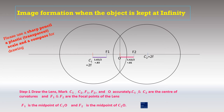The first step to draw a ray diagram accurately is to draw the lens correctly and mark the center of curvature, focus, and optic center of the lens. Using a very sharp pencil and compass, we draw two overlapping circles and mark C1 and C2 as the centers of curvature. F1 is the midpoint of C1O and F2 is the midpoint of C2O, where O is the center of the overlapping part — the optic center of the lens.